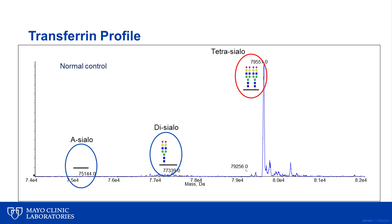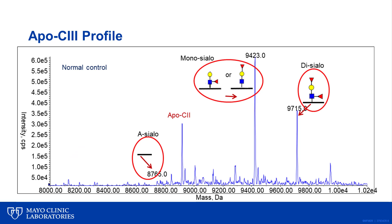The normal state of transferrin is a fully glycosylated state represented by tetrasialotransferrin. In a normal transferrin profile, the fully glycosylated transferrin, shown with the red circle, is abundant with very small fractions of disyalo and asialotransferrin circled in blue. In a normal APOC3 profile, all three forms are present. However, the proportion becomes different in abnormal glycosylation — the fully glycosylated APOC3 becomes low.